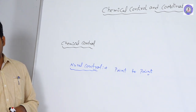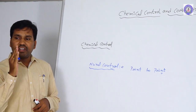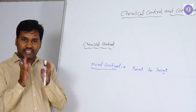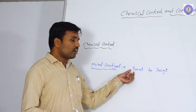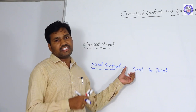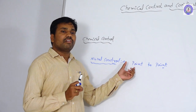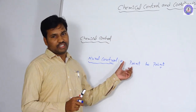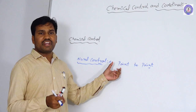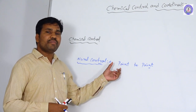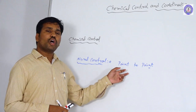Neural control means one particular point or cell is controlled with the help of neurons. It is a point-to-point controlling system. It is not continuous — it is a short-duration controlling mechanism. Within a fraction of seconds, that function is completed and control is stopped. It is a short-duration mechanism.